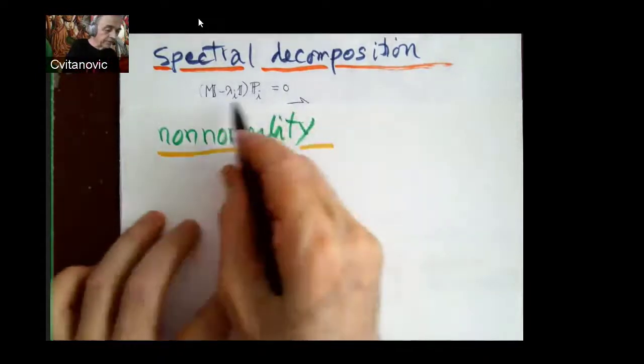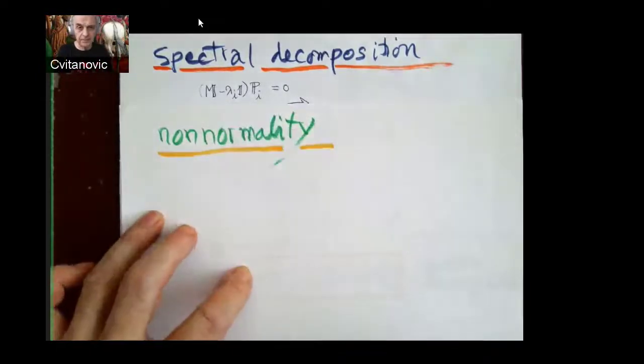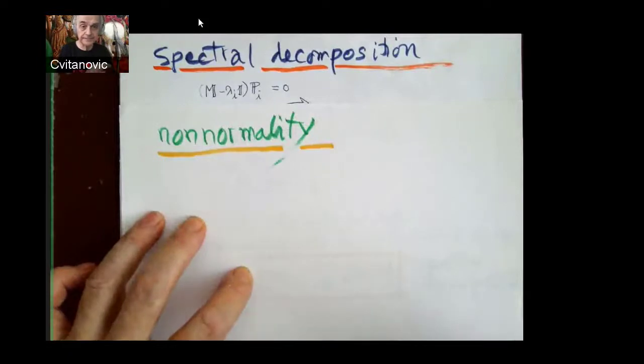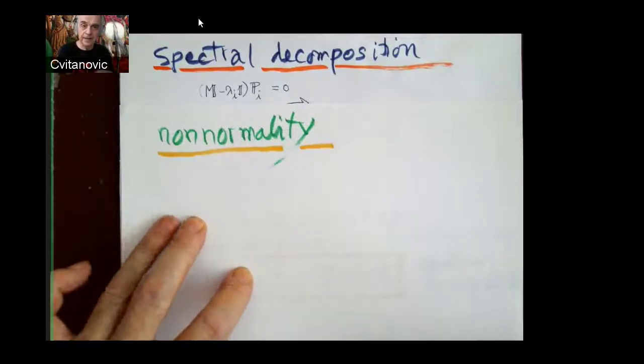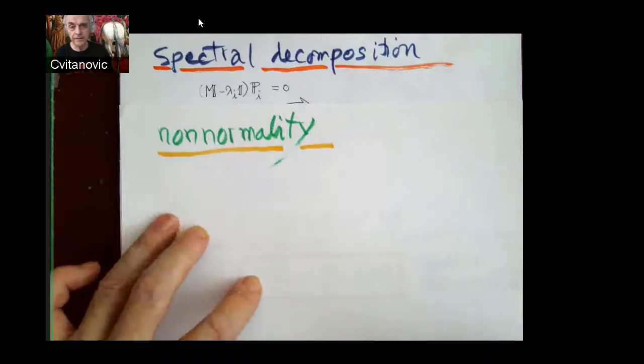Because P is a function of M only, a matrix commutes with itself, and every matrix also commutes with every function of the same matrix.